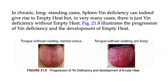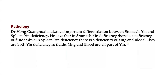This figure illustrates the progression of EIN deficiency and the development of empty heat. First we have the tongue without coating and normal color, then tongue without coating with a red body — showing the progression of EIN deficiency toward the development of empty heat.